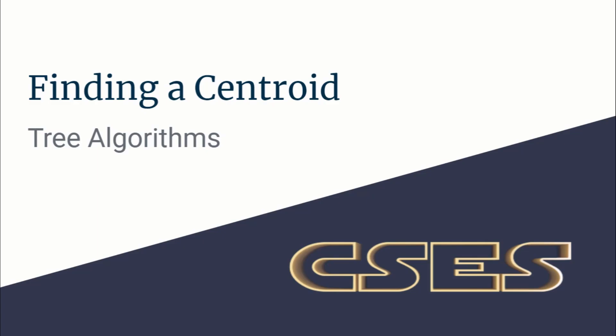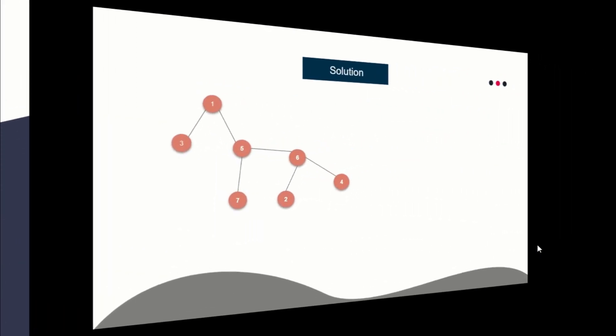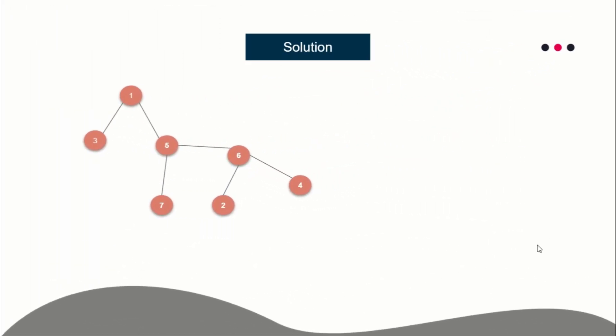Hello guys, this is Code and Code, and this is a video editorial for the problem 'Finding a Centroid', which is from the tree algorithms category taken from CSCS. The problem is simple: you are given a tree and you have to find the centroid of it. If there are multiple centroids, you can print any of them.